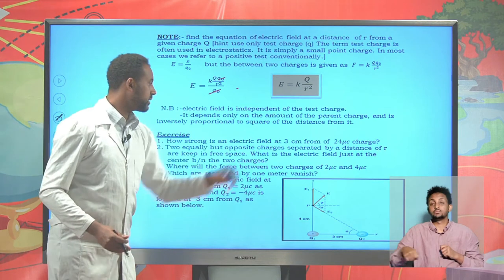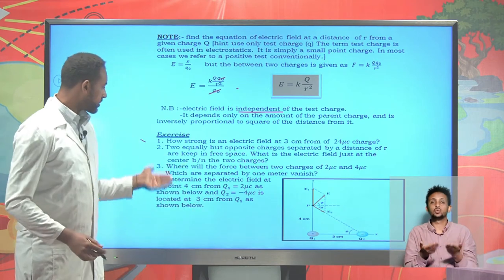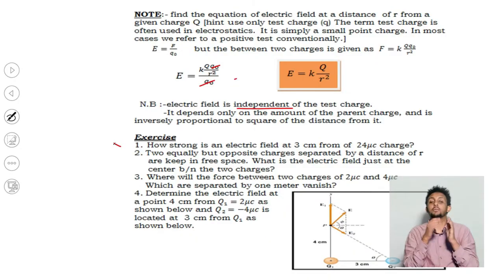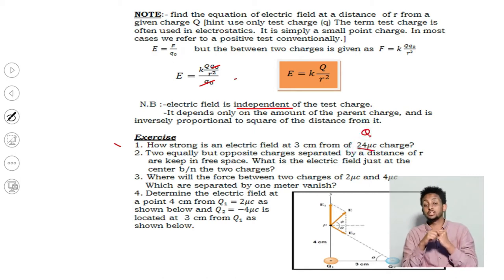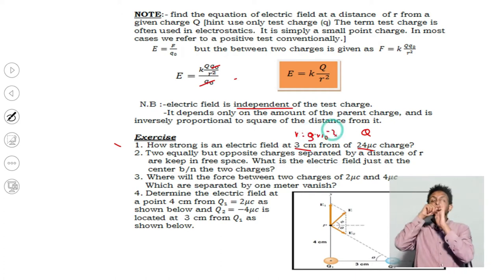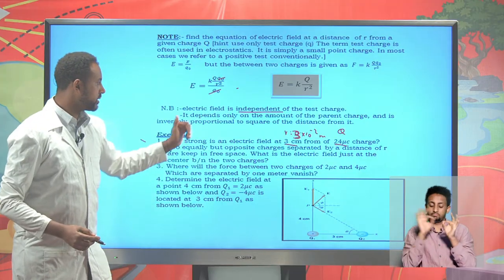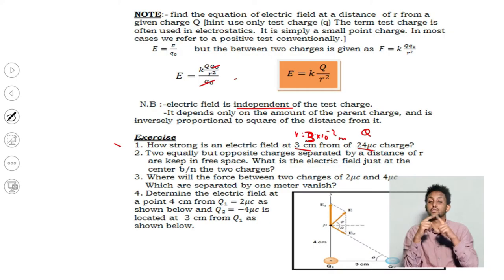Students, try to solve this: how strong is an electric field at 3 cm from a 24 μC charge? Use 24 μC as the main charge, K is already known, and R = 3 cm = 0.03 m = 3 × 10⁻² m. Substituting these values, you can find the electric field strength. You can also find the electrostatic force between electrons and protons.